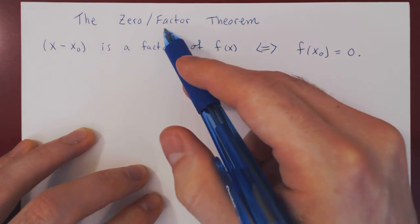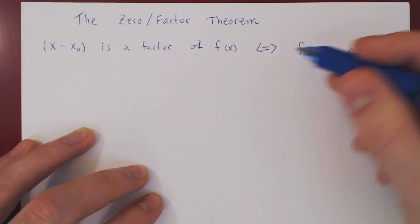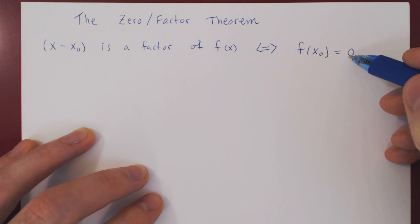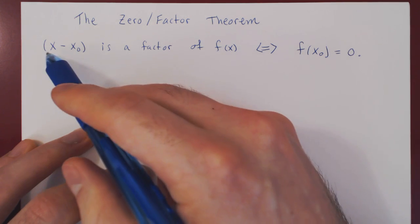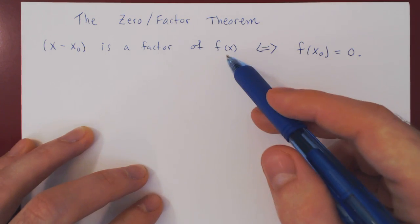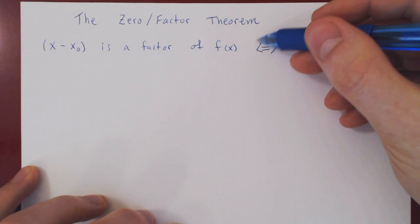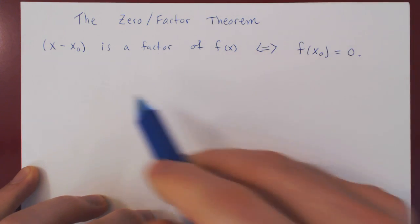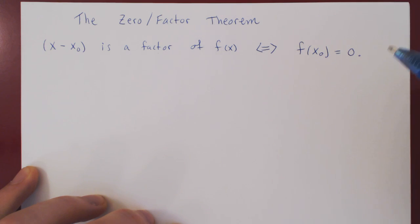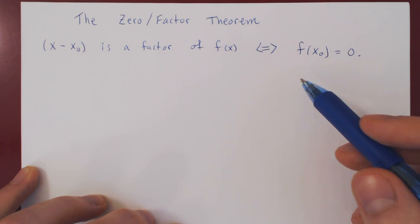This is why we use the word zero and factor. x₀ is a zero of the polynomial f of x because f of x₀ is equal to zero. And here we have x minus x₀ being a factor of the polynomial. The if-and-only-if symbol means a logical equivalence — these two statements look different on the surface, but they are actually equivalent.